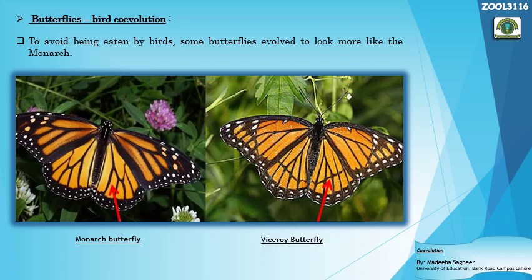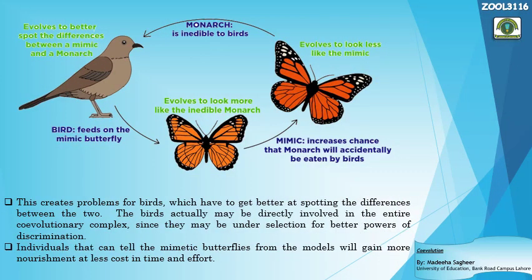A cycle represents the co-evolution between these species. Recalling that co-evolution is an evolutionary process between two or more species, here we have three species co-evolving with each other — the monarch, the viceroy, and the birds. Birds feed on the mimic butterfly, but after the viceroy gained mimicry it evolved to look more like the inedible monarch, which helps the mimic save itself to some extent from being eaten by birds.